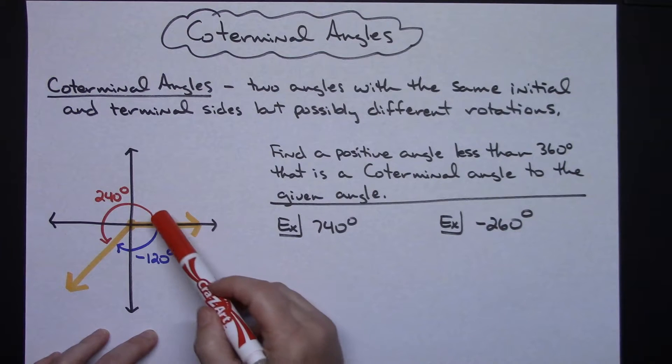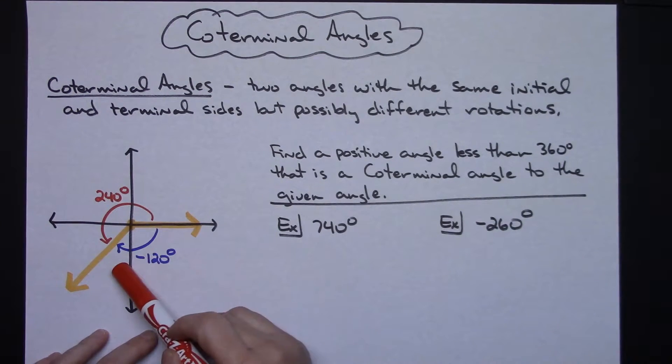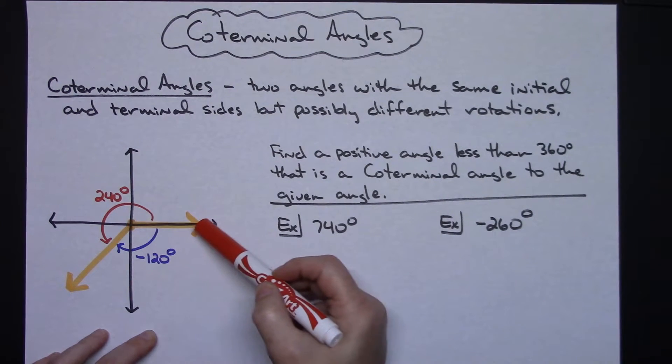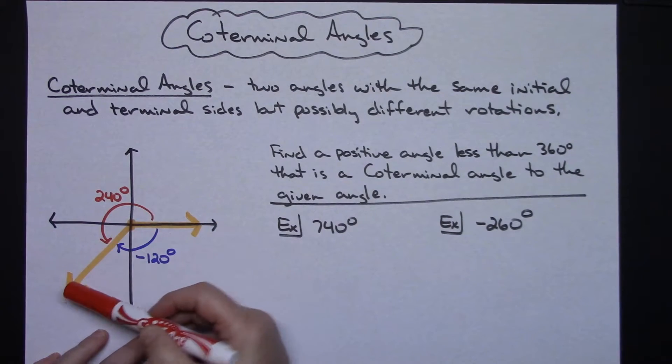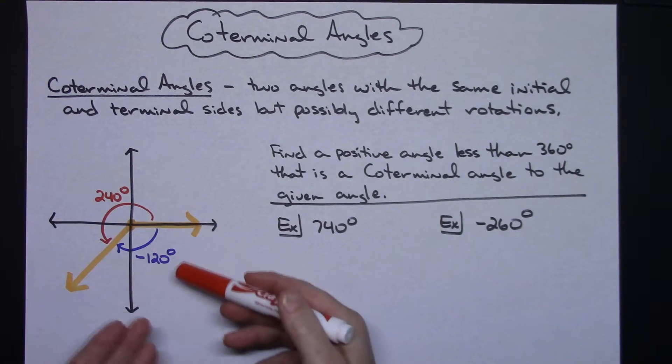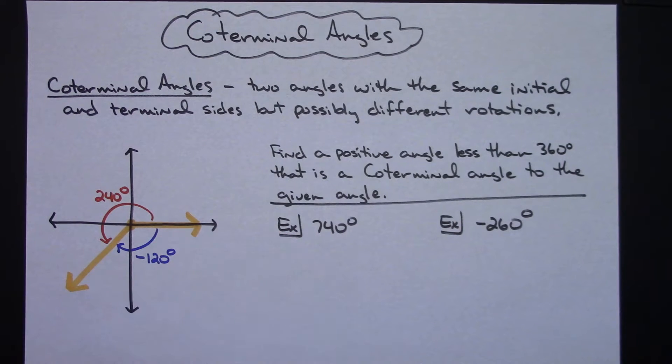Now just the fact that these two coterminal angles they both have the same initial side and the same terminal side. In this particular example they've got different rotations. They don't have to have different rotations; it just depends on what you're asked for and what you need.